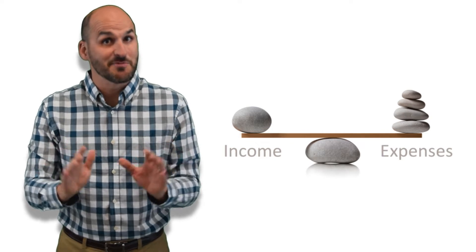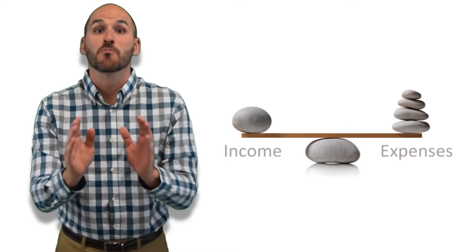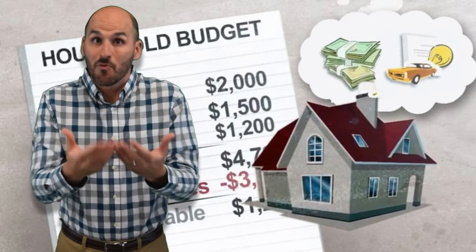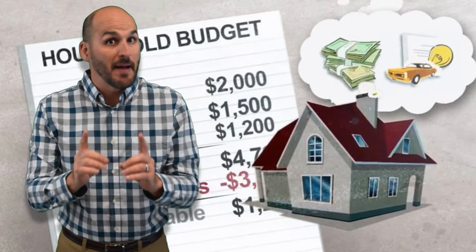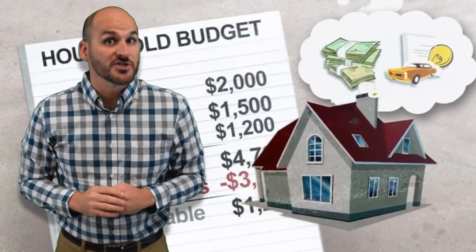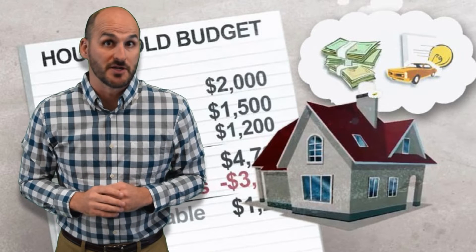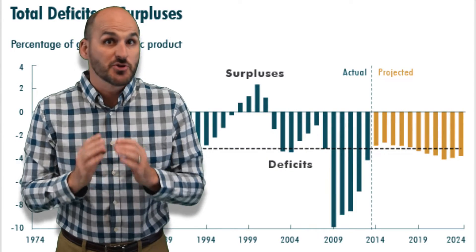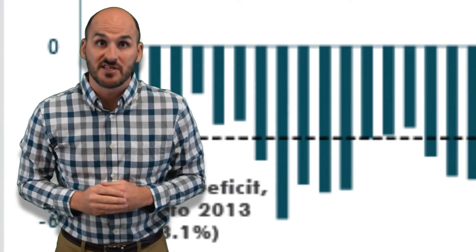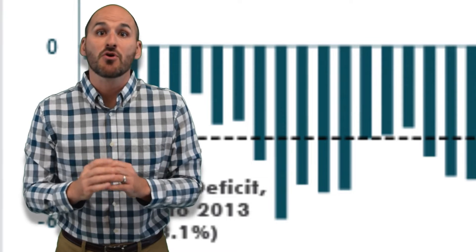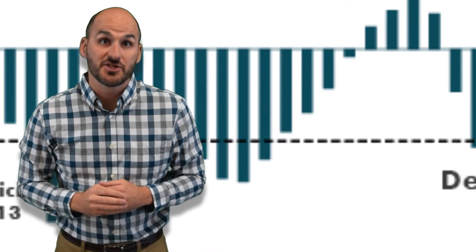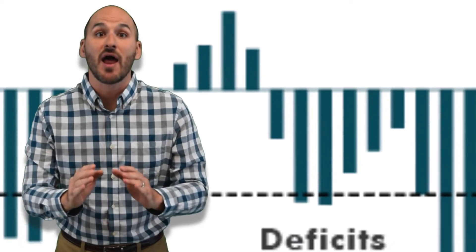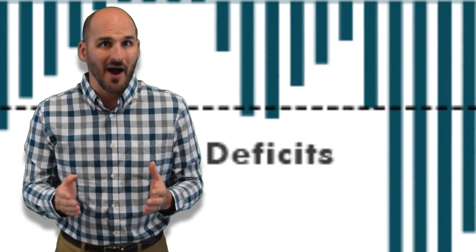Balancing the budget seems pretty simple — just don't spend more than you have and live within your means. But balancing the federal budget is nothing like balancing a household budget. In fact, it's incredibly difficult to do. Between 1970 and 2017, the federal government experienced 42 budget deficits, only 5 budget surpluses, and has never had a balanced budget. But why?